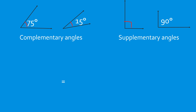In complementary and supplementary angles, it's not necessary that they are side by side sharing a common side. They can be separated, as long as their total measurement equals 90 degrees. So 75 degrees and 15 degrees are complementary angles. While 90 degrees and another 90 degrees — those two angles are supplementary angles.